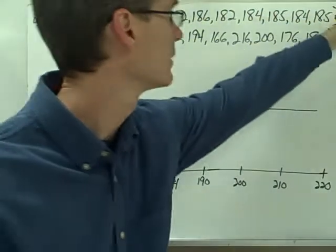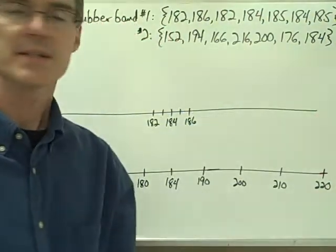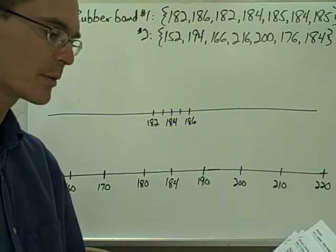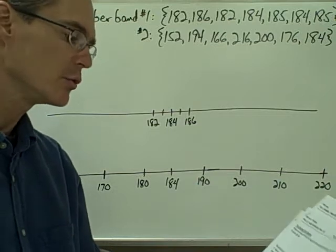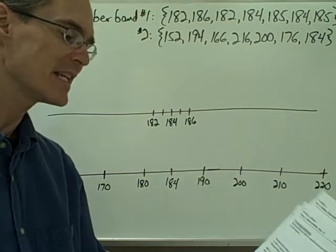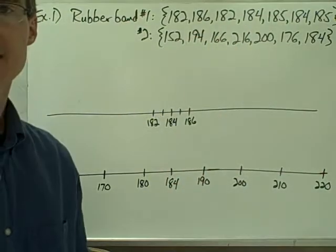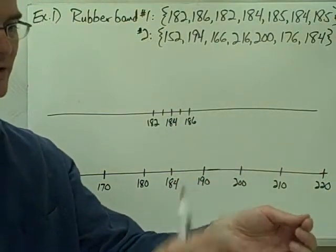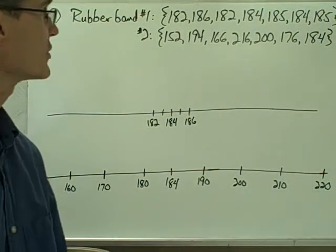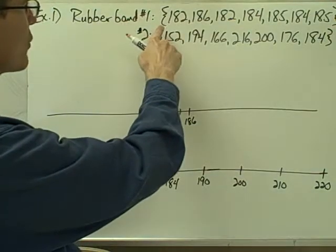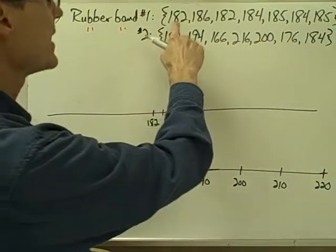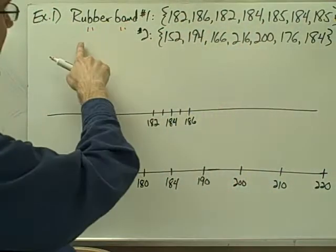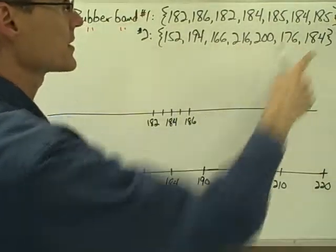Let's take a look at this example. If you want to find out how consistently rubber bands will travel when launched, you use a ruler to launch two rubber bands seven times each, and you generate two data sets. We pull the rubber bands back to the same point on the ruler and launch them, measuring how far they travel. Rubber band number one has seven distances in centimeters, and rubber band number two has six distances.